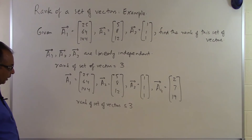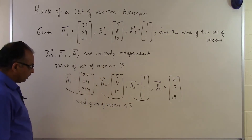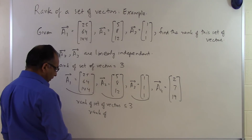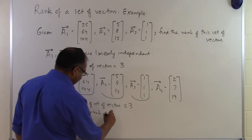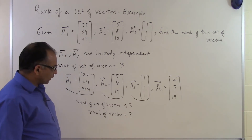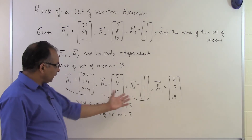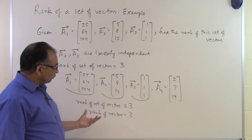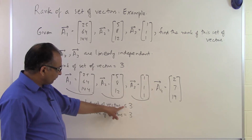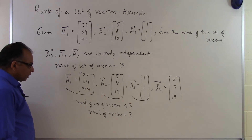All we have to show is whether three of these vectors are linearly independent. We already found out that a1, a2, and a3 are linearly independent, so the maximum number of linearly independent vectors is at least 3, which means the rank is exactly 3. It doesn't matter whether all four are independent or not — a4 can be linearly dependent or independent, but the rank will always be less than or equal to 3, and since we found three linearly independent vectors, the rank is exactly 3.